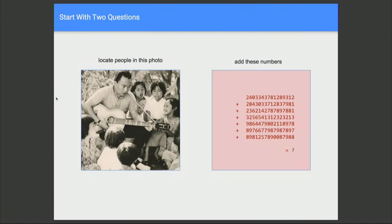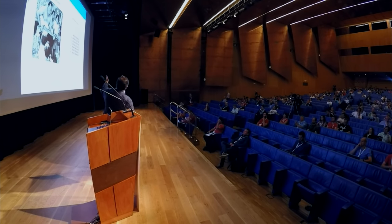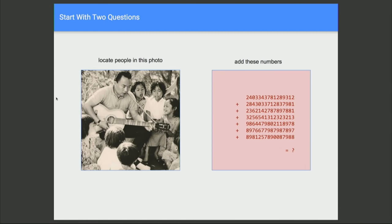Just to get us into the right frame of mind, I'm going to start with two questions. I have a seven-year-old daughter and I said, can you look at this picture and point out where the people are? As a seven-year-old she found that quite easy. But when I asked her to add numbers, she found that very difficult. With computers, doing a calculation like that is very easy — but instructing a computer to find people in a photo is not so easy. So that's interesting: that's easy for us but hard to code for computers.